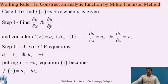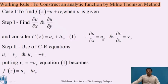Consider the working rule to construct an analytic function by the Milne Thomson method. In Case 1, the real part u is provided and we want to find the analytic function f(z). Step 1 is to find the partial derivatives of the real part with respect to x and y — that is, ∂u/∂x and ∂u/∂y — and then use the definition of the derivative of an analytic function: f'(z) = ux + i·vx, where ux = ∂u/∂x and vx = ∂v/∂x.